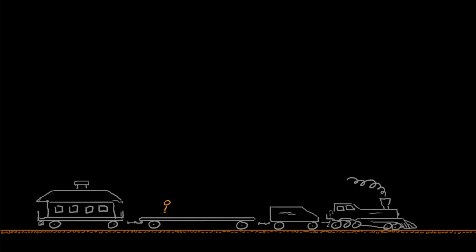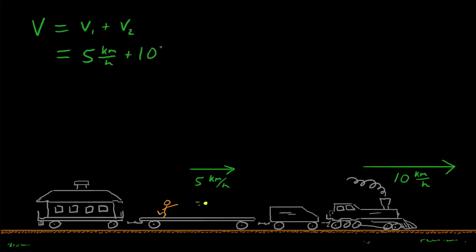You're on a platform railroad car moving forward relative to the ground at 10 kilometers per hour. You throw a ball forward at 5 kilometers per hour. How fast is that ball moving relative to you and the train? That's right, 5 kilometers per hour. Easy. Now, how fast is the ball moving relative to the ground? You might be thinking V equals V1 plus V2. So V equals 5 plus 10 equals 15 kilometers per hour. Actually, that's not quite right.